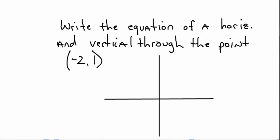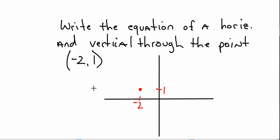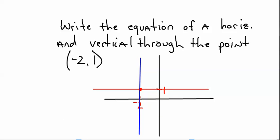If you plotted this point — going to negative 2 and up to 1 — a horizontal line through that point would look something like that. A vertical line through that point would look something like that. Along this blue line, what is every x-value? X is equal to negative 2 everywhere on this line. So the equation for that vertical line is x equals negative 2.